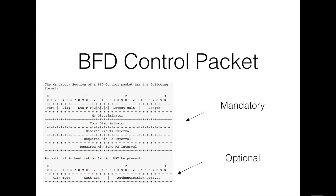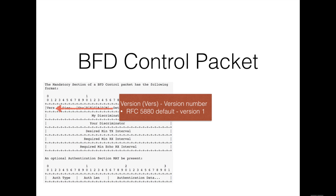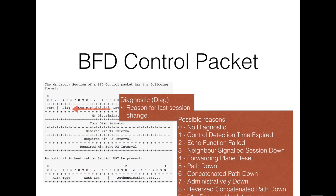The BFD control packet has a mandatory section and an optional authentication section. The format of the authentication section, if present, is dependent on the type of authentication in use. The version field specifies the version number — per RFC 5880, the default version is 1. The diagnostic field specifies the local system's reason for the last change in session state.